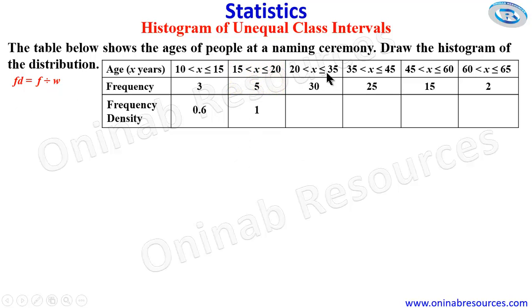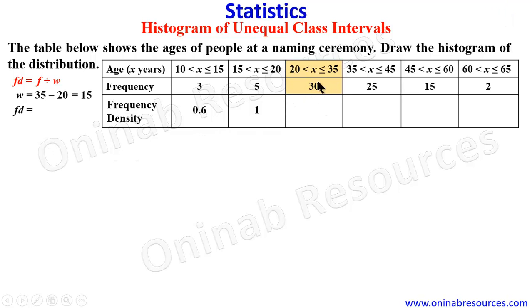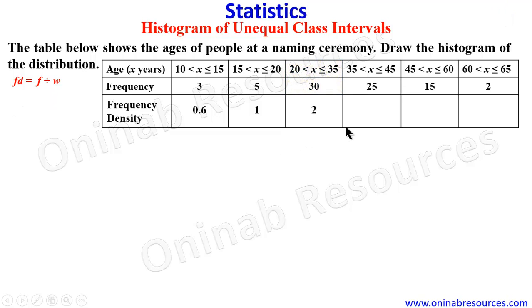For the third class interval, the upper limit is 35 minus the lower limit of 20, giving 15. To calculate the frequency density, the frequency is 30 divided by the class width of 15. Thirty divided by 15 gives 2, therefore the frequency density for the third class interval is 2.